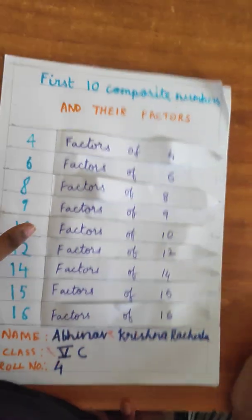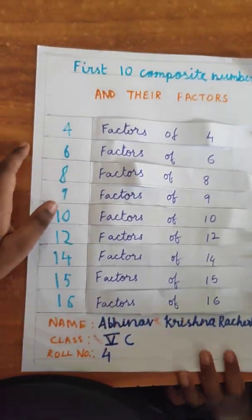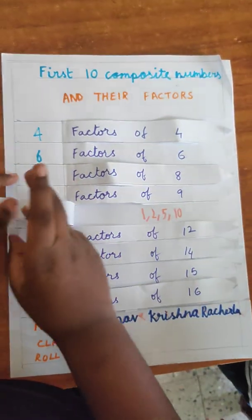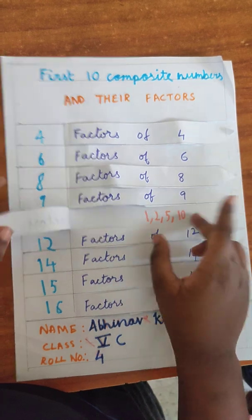Now, choose another one. Why not? 10. Now, factors of 10 are 1, 2, 5, and 10.